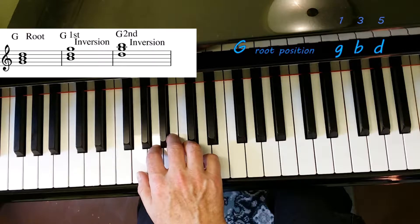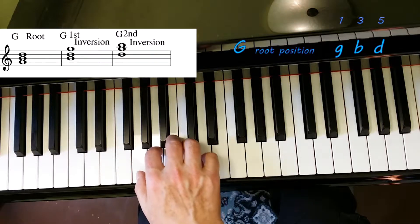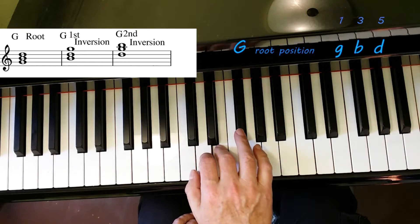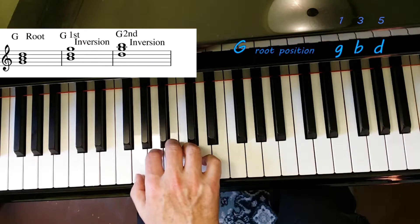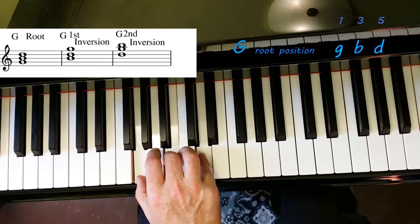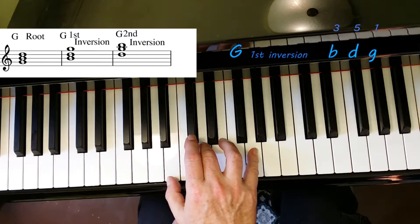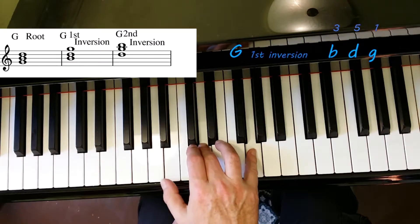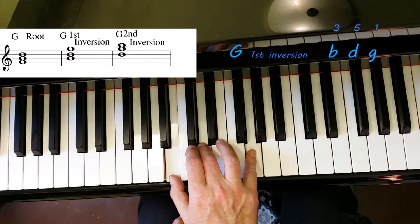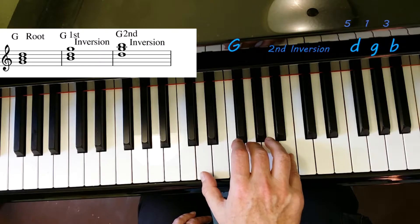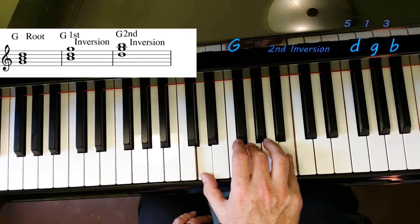We're going to go through the sharps in the circle of fifths, adding one sharp to the key every time. Starting with G major, because we already know C. G has one, two, three, four, five, six, seven, eight. One, three, five—here's your triad. That's your root position triad. Here's your first inversion: one, three, five. Here's your second inversion: one, three, five. G major.